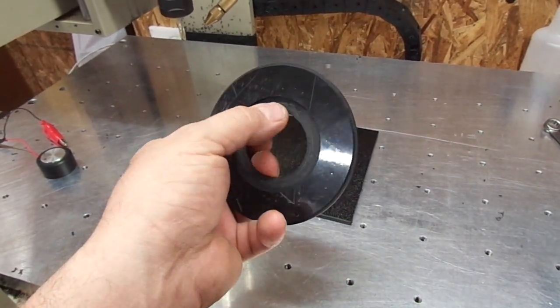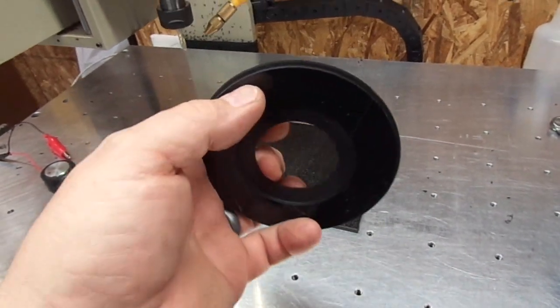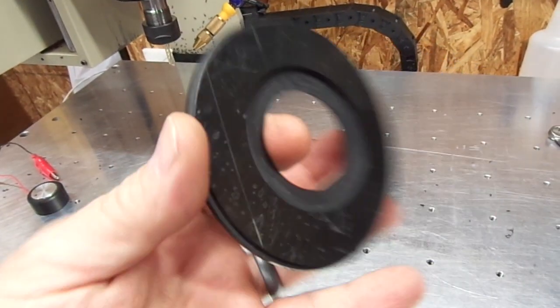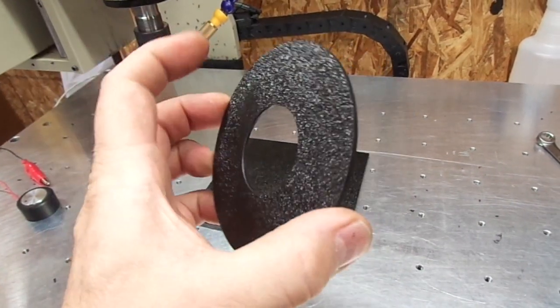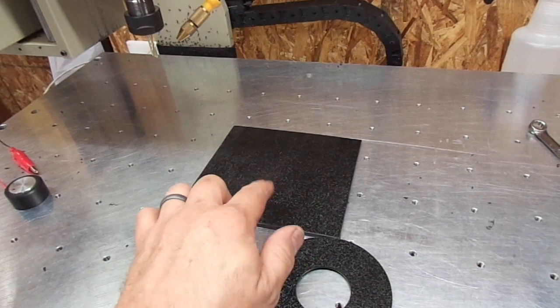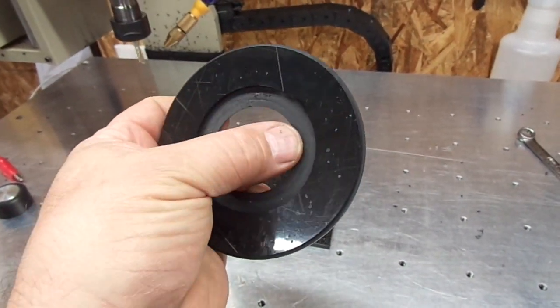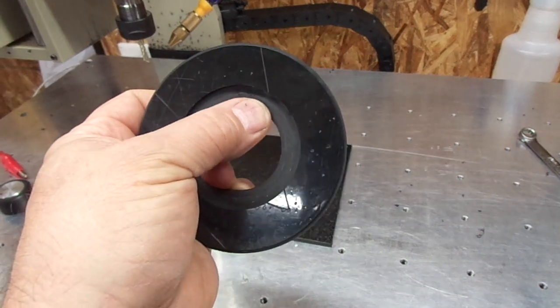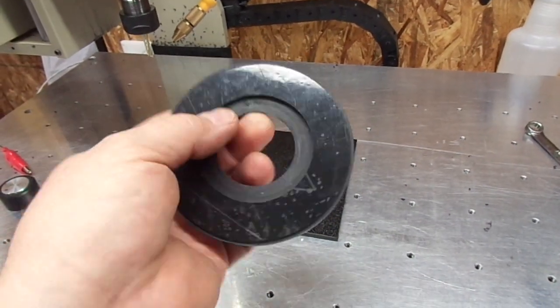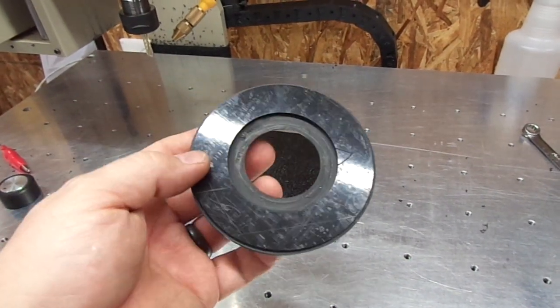This part right here is where the horn commutator sits in, and then this little step sits inside the actual column and this sits on top. The reason I'm doing another one is this little counterbore here is about 15 thousandths too thick, so we'll make another one with this slightly thinner.